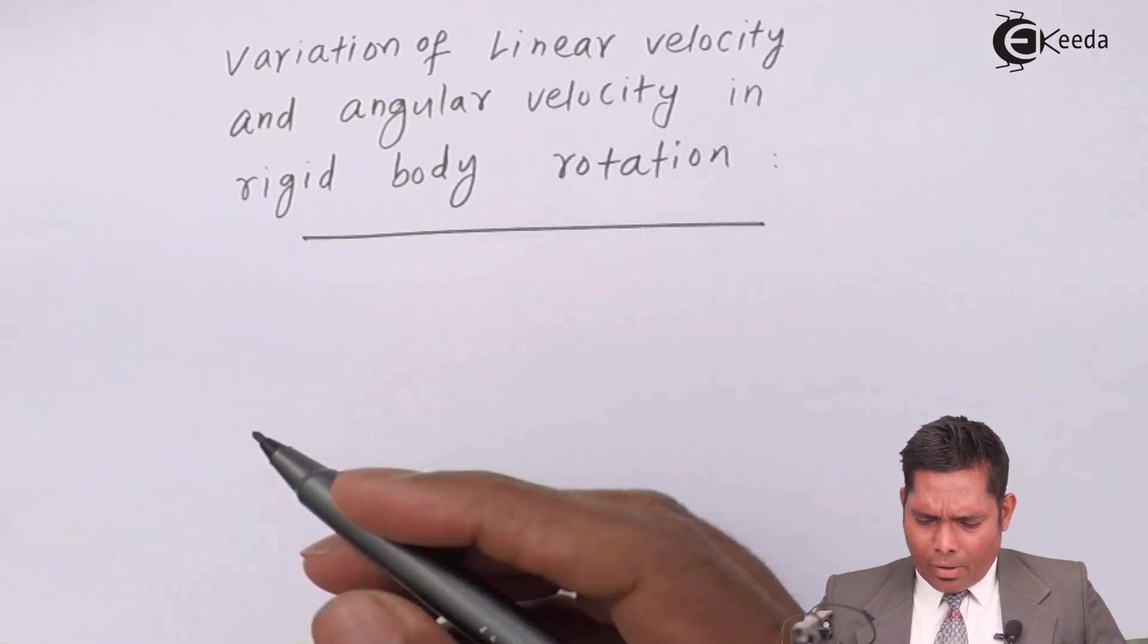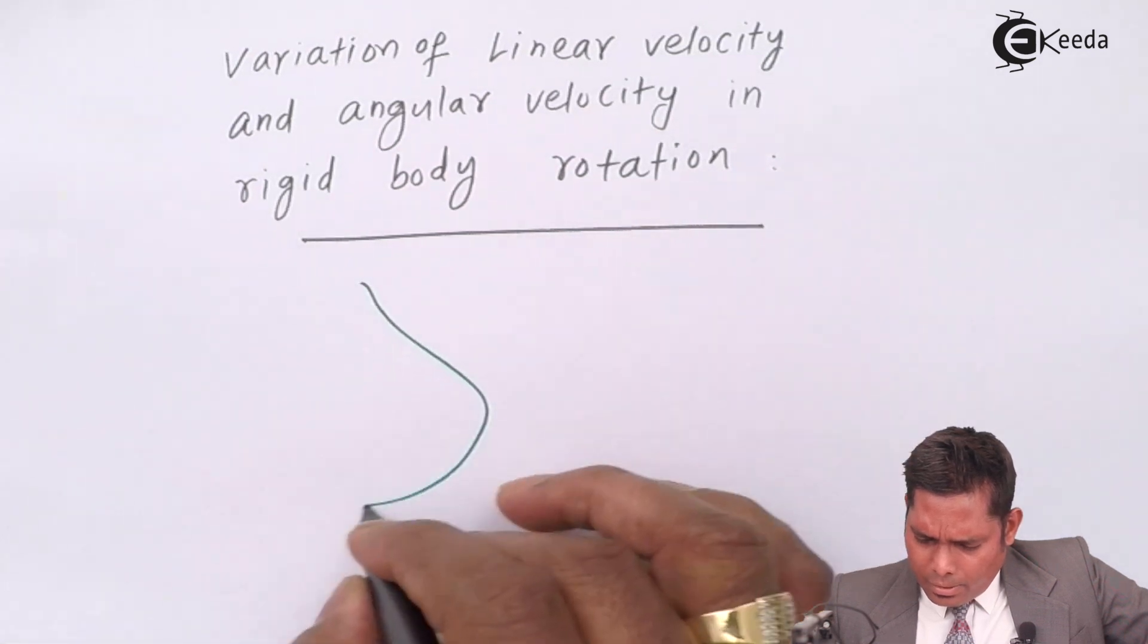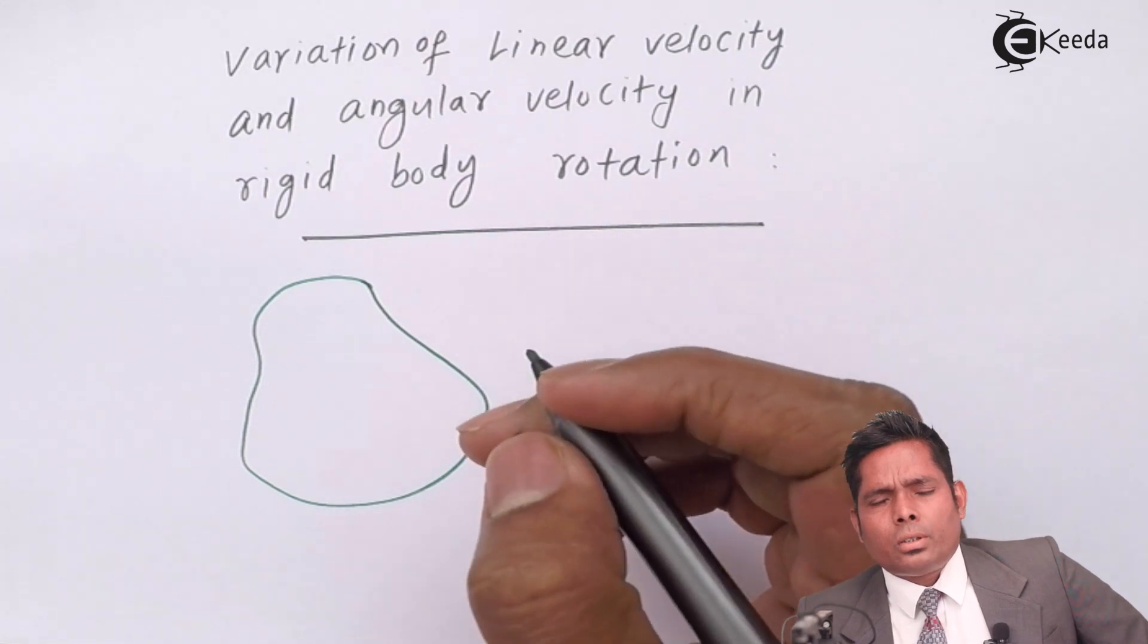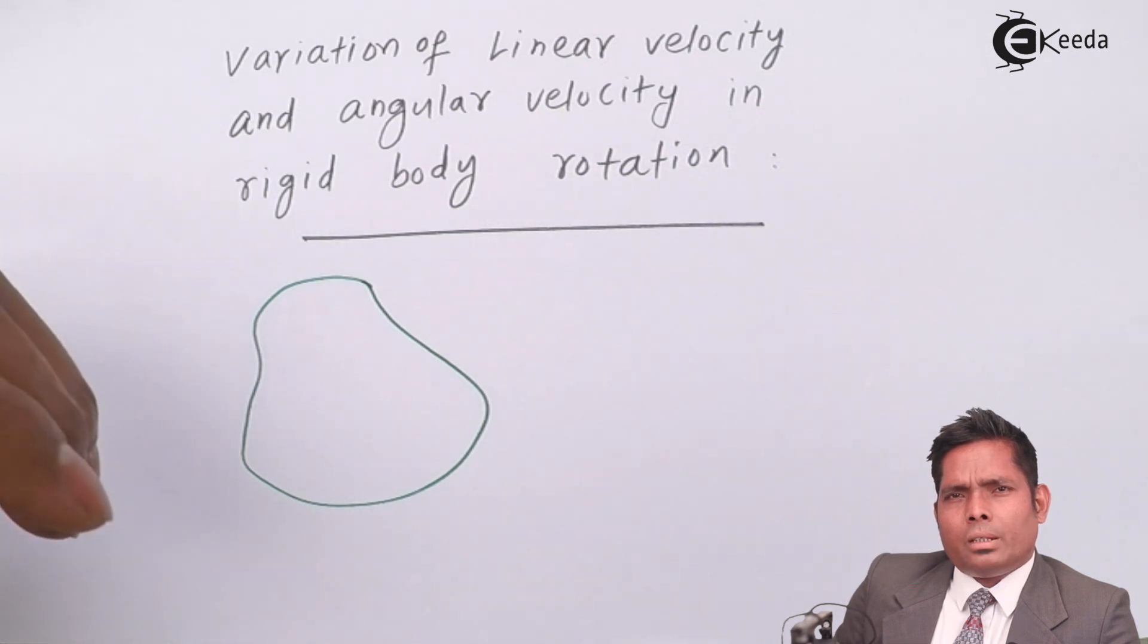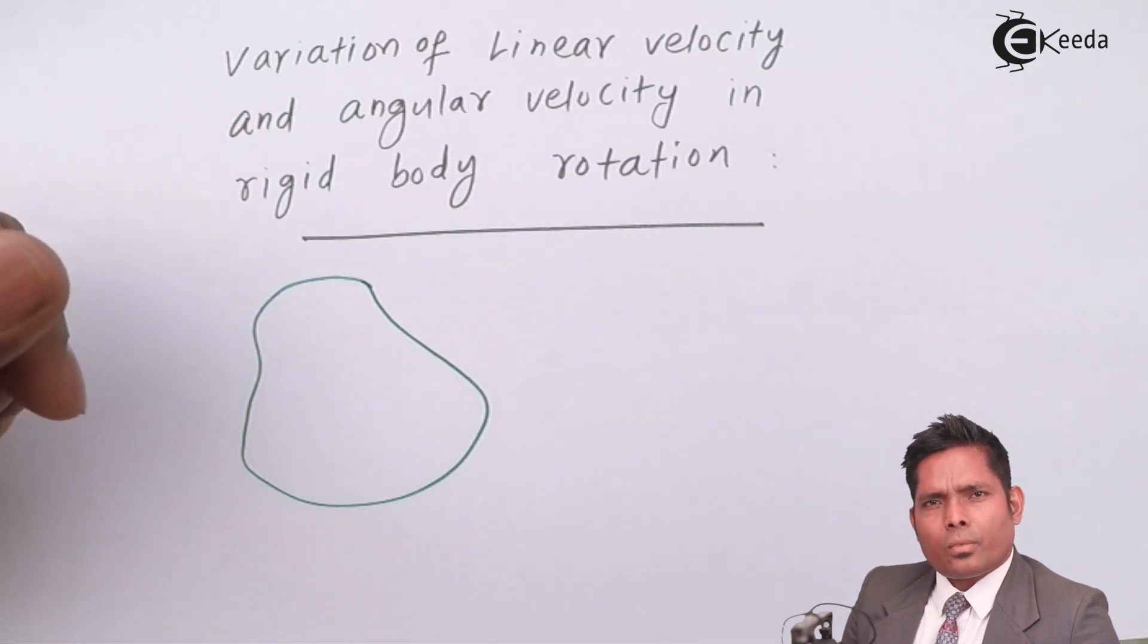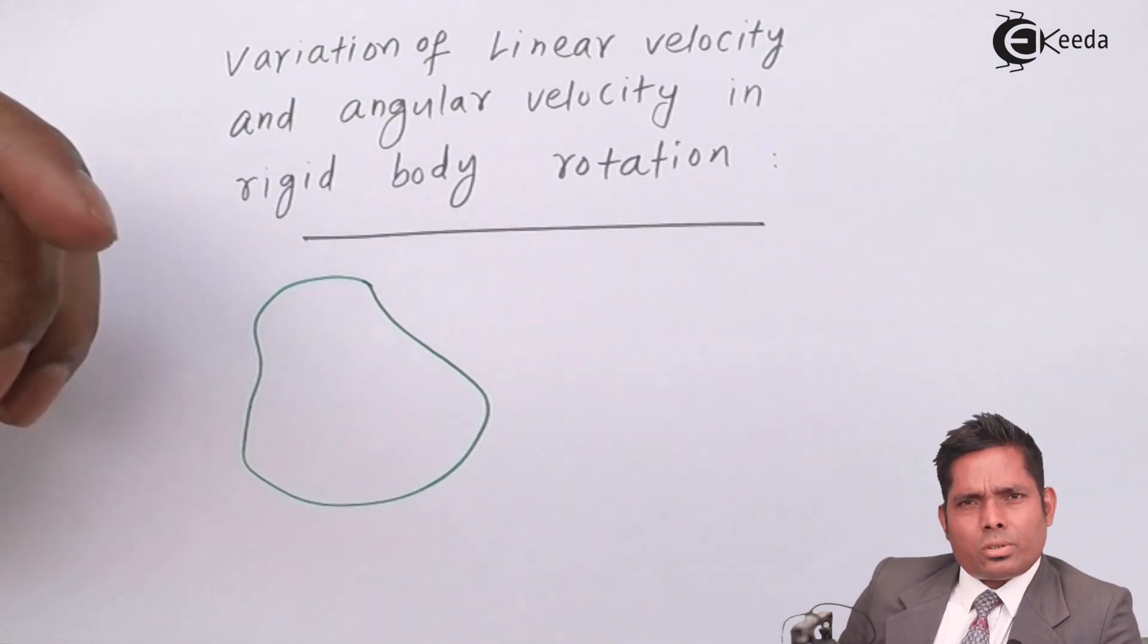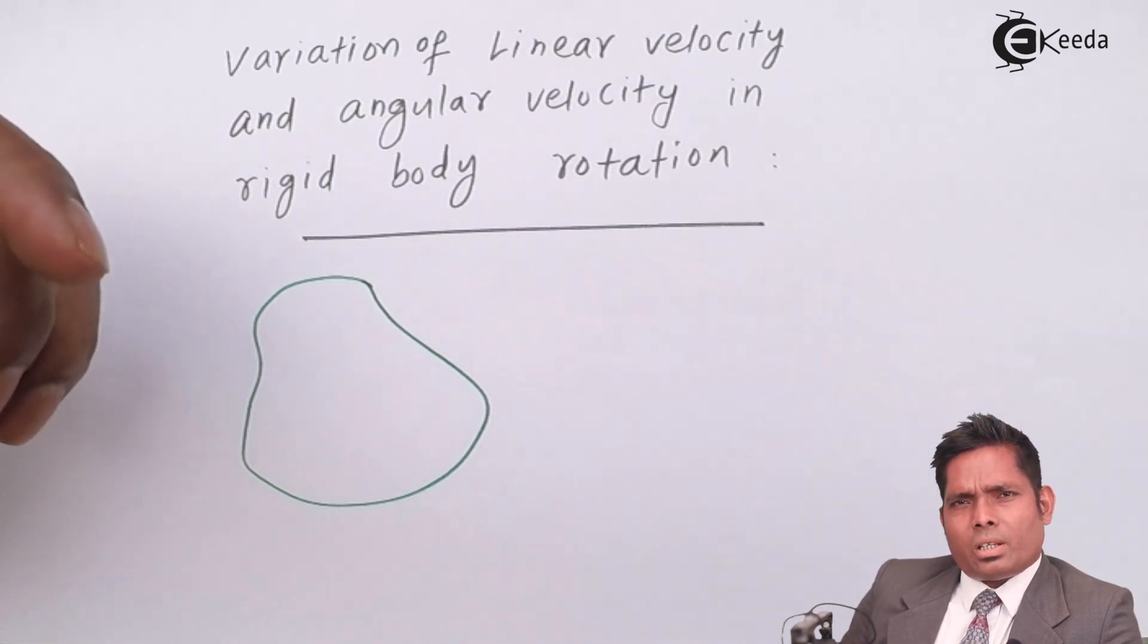What it says is that if I consider a rigid body, suppose this is my rigid body. How to define a rigid body? The definition of rigid body is that anybody which cannot be changed or deformed, whatever may be the external force. That means the body's shape and size cannot be changed.